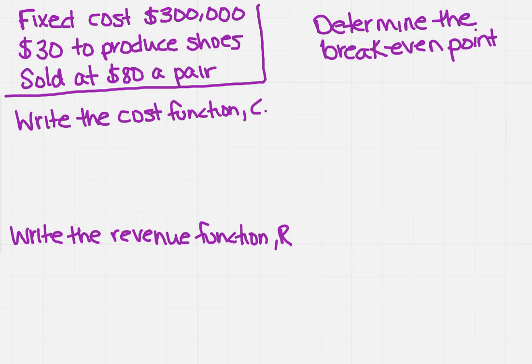So what if you're given something that resembles the following: you're told that you have a fixed cost of three hundred thousand dollars and it costs thirty dollars to produce a pair of shoes. And then you're going to turn around and sell those shoes for eighty dollars a pair. So we need to write a cost function and a revenue function.